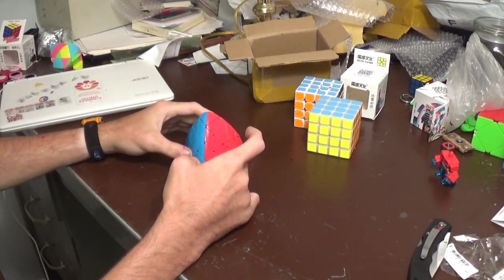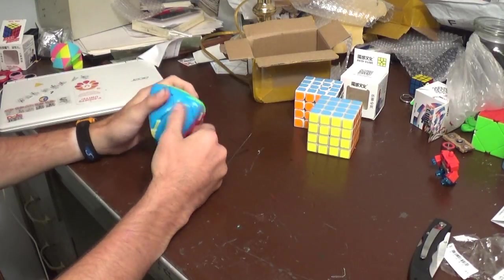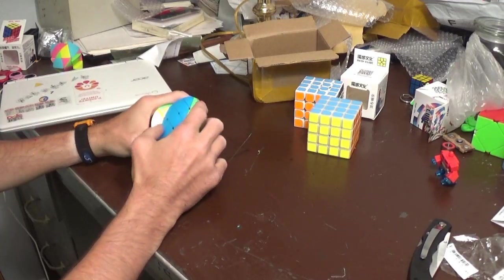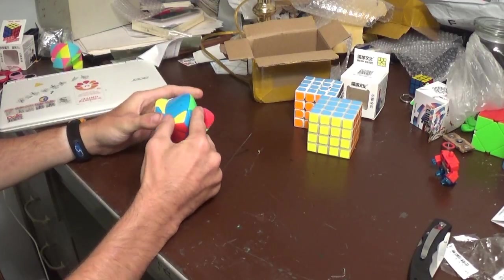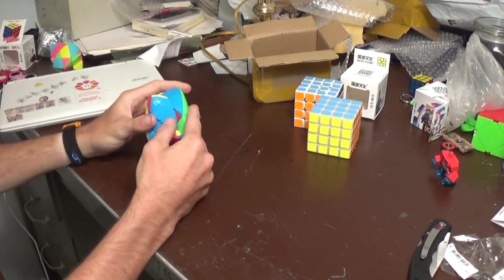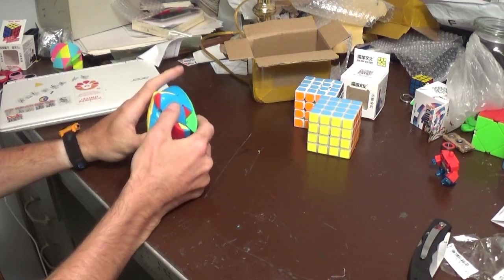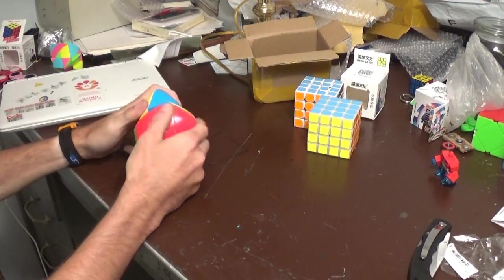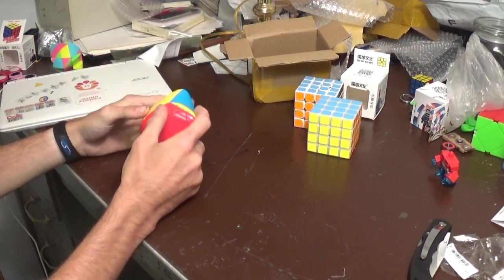And this is definitely the cheaper version of the 4x4 Megamorphix or Mastermorphix, whatever you call it, that's out there. What is out there is you can get one customized made by Traiphum for a high price, or get the MoYu one that's about $20-$30, or get this Shengshou one for about $10-$15, something like that. And this is really good.